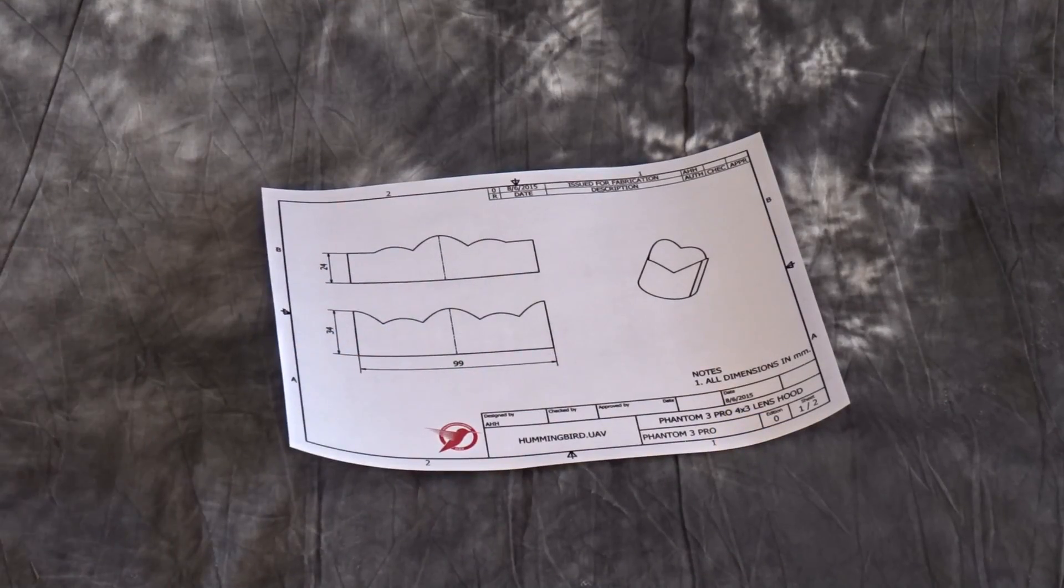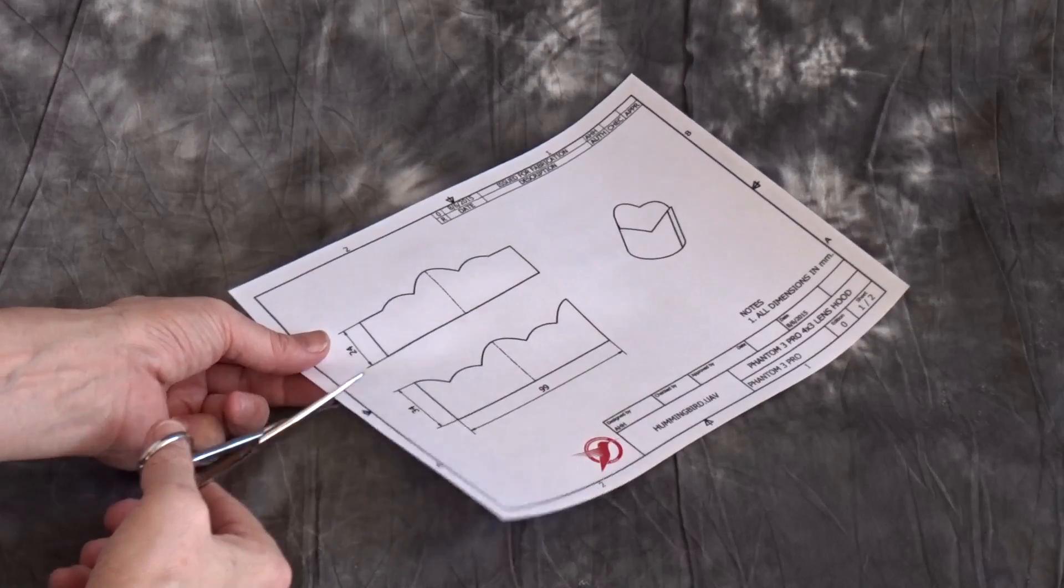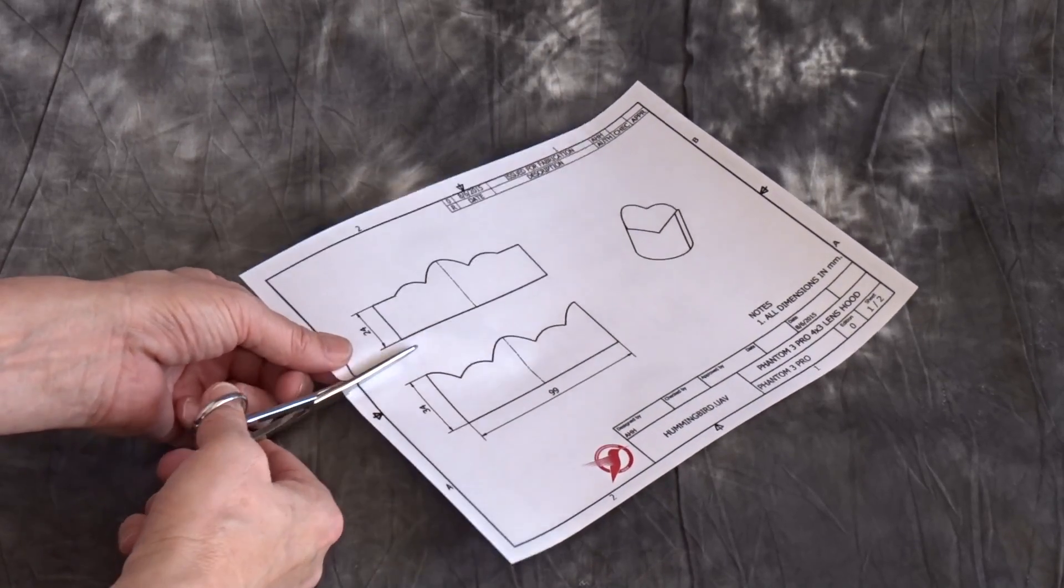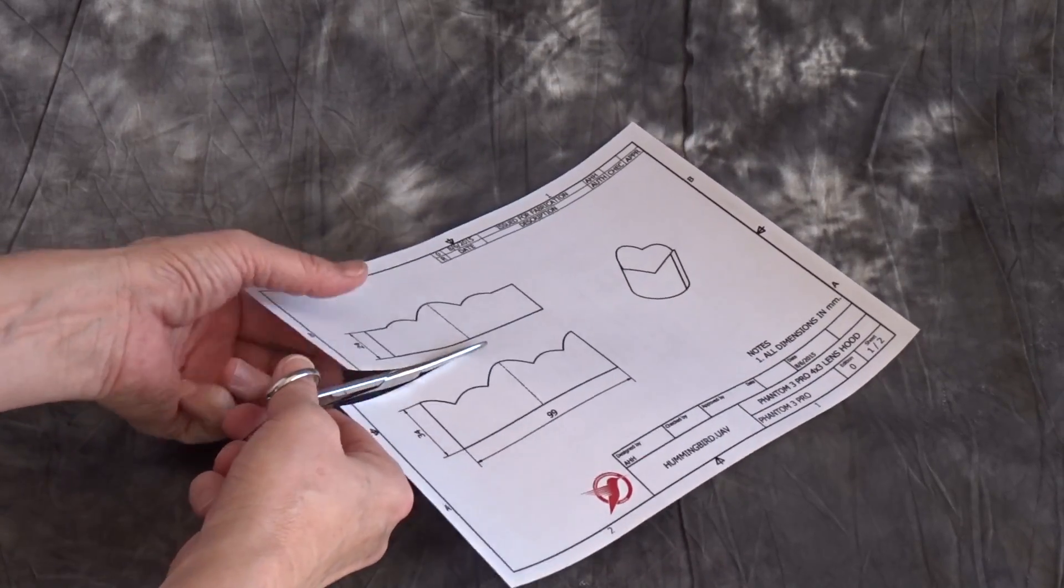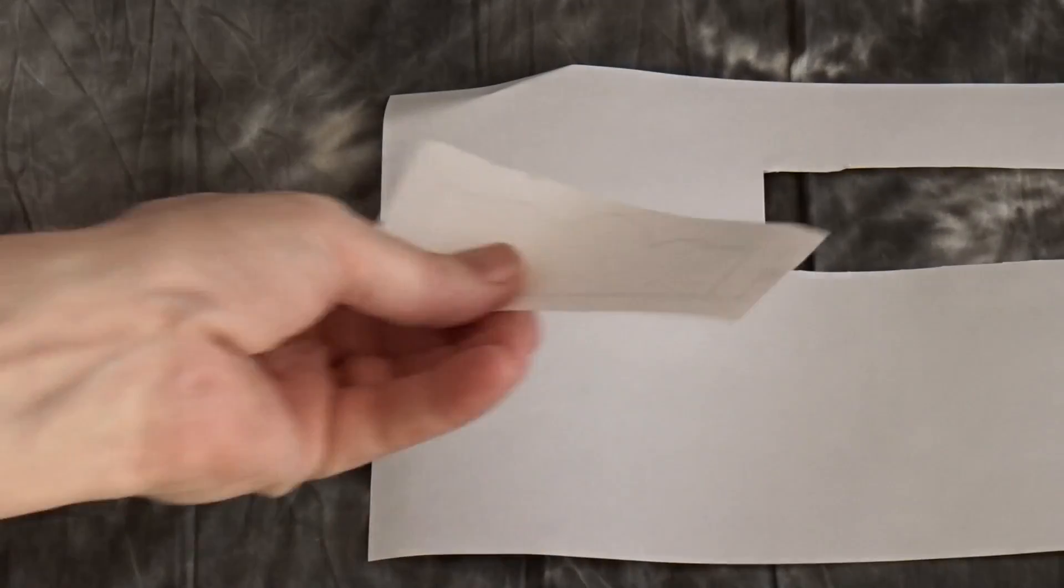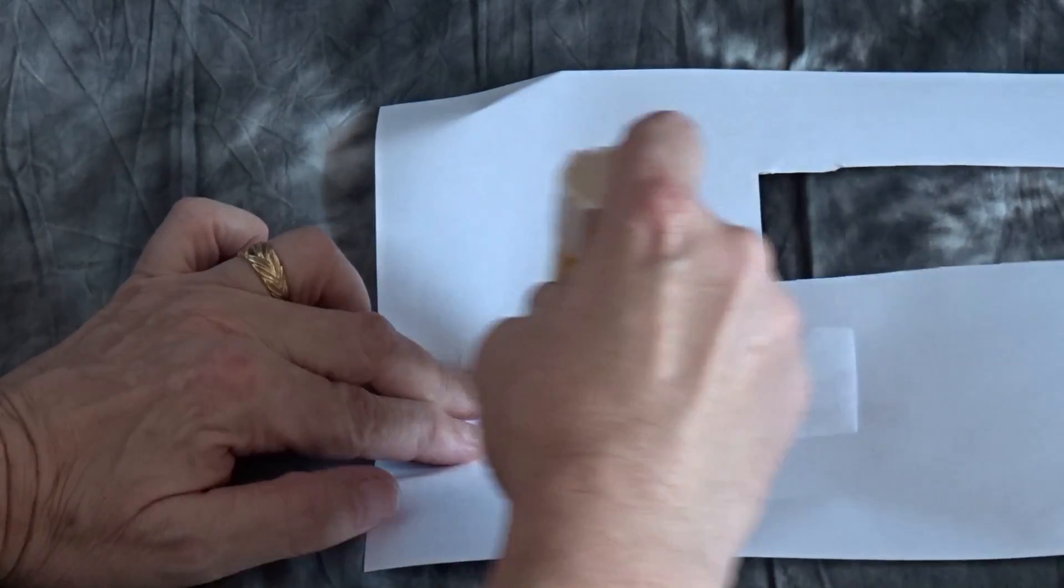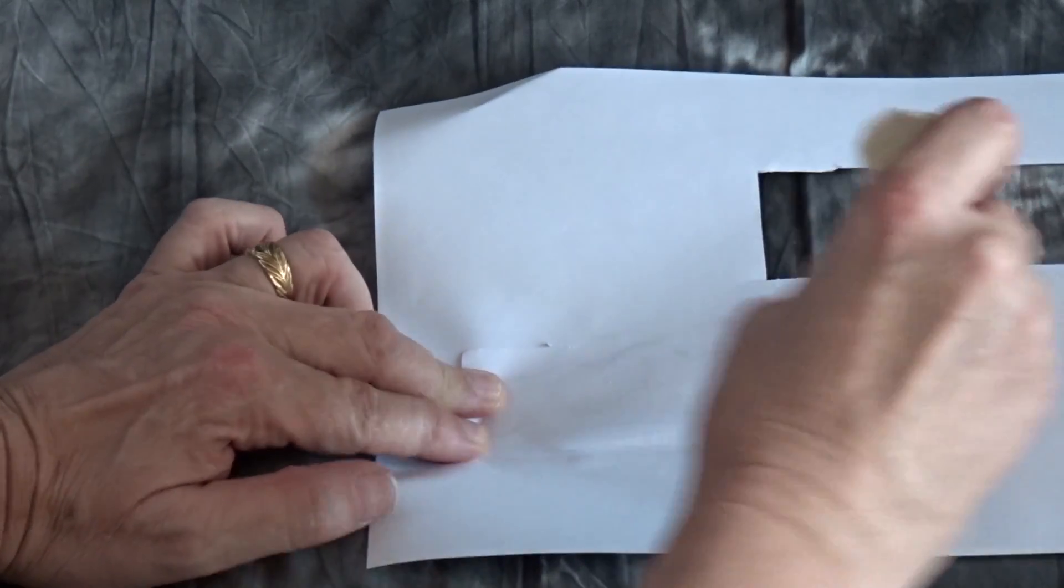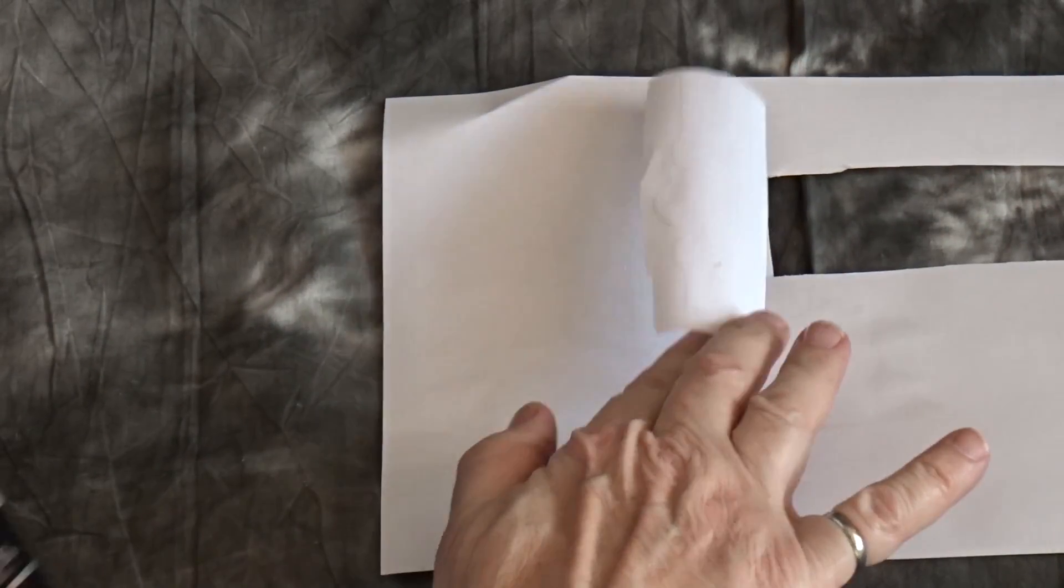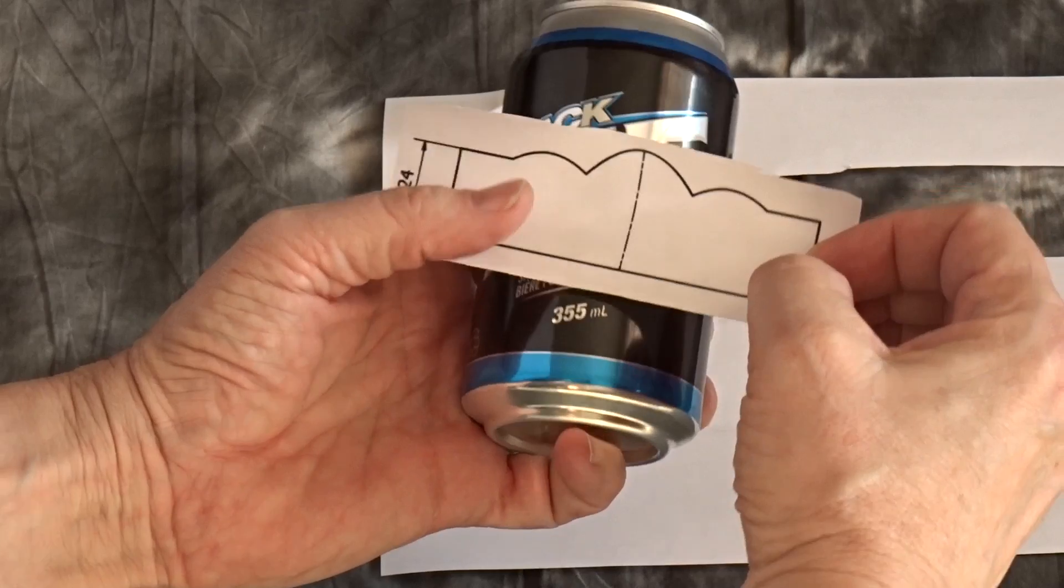We begin by cutting out the pattern, don't have to be right on the edges. Next we apply glue to the pattern and firmly press it onto the side of the beer can.